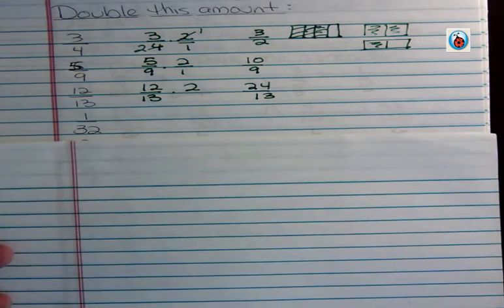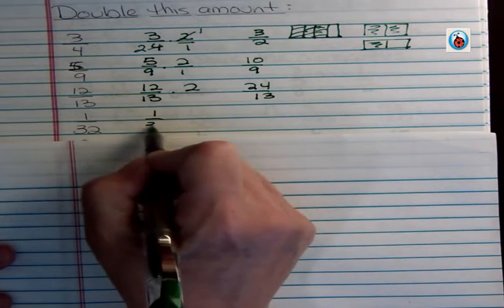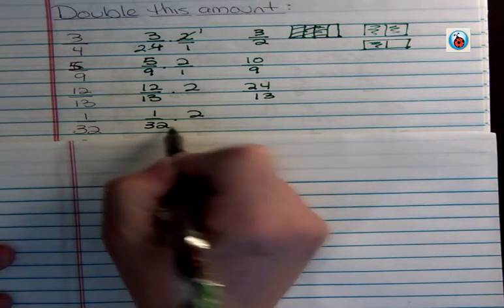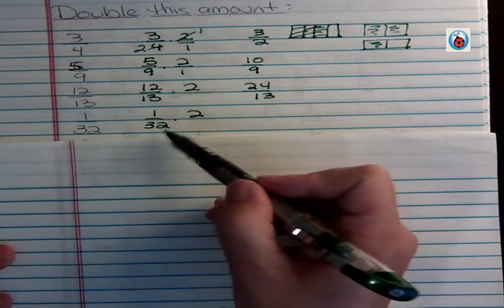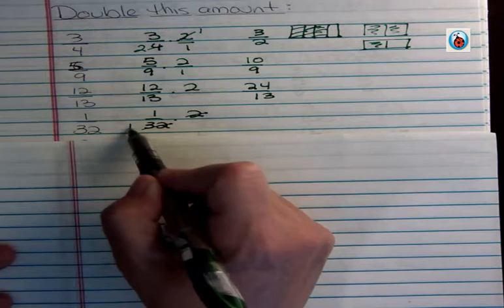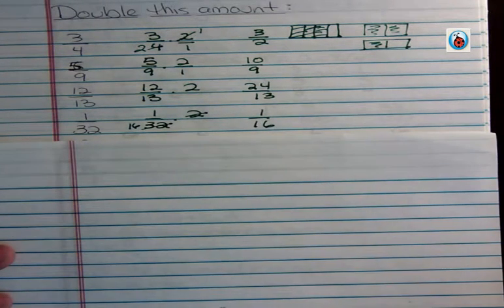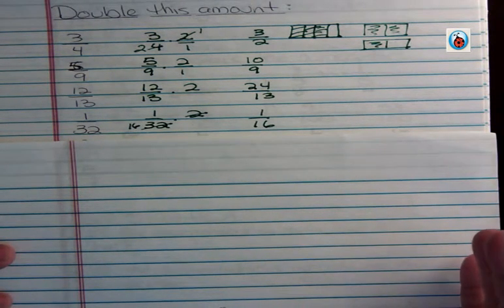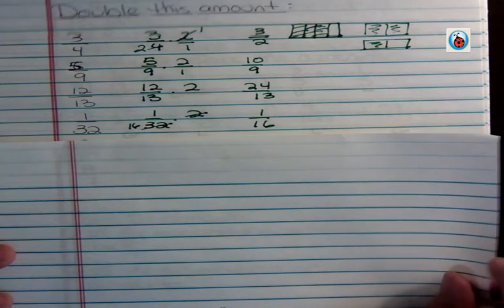One thirty-second doubled. Well in this case, thirty-two is an even number. Two goes into thirty-two sixteen times. So one sixteenth. I didn't touch the numerator there because I could just cut the denominator in half.